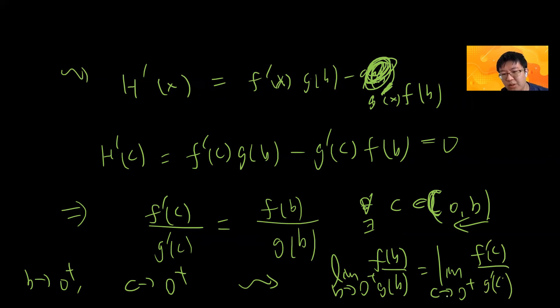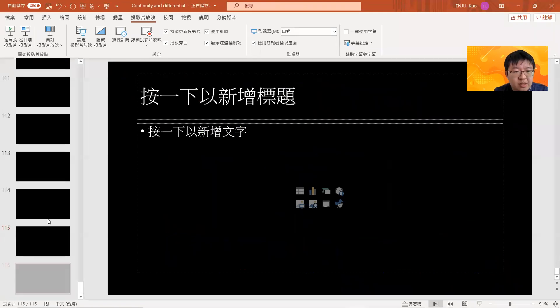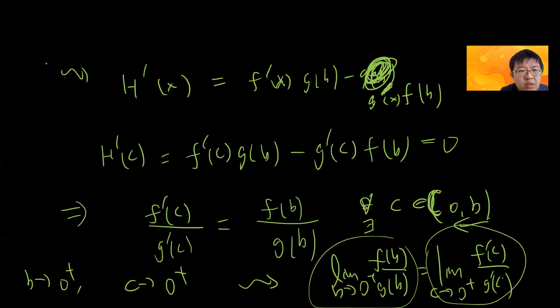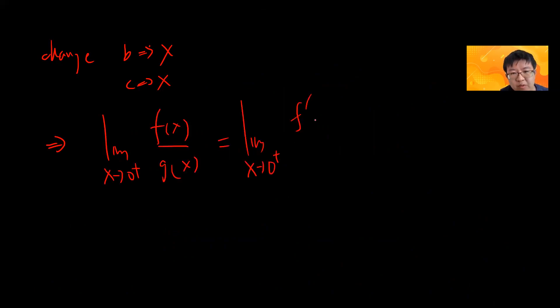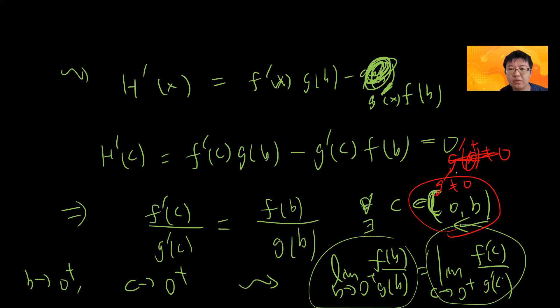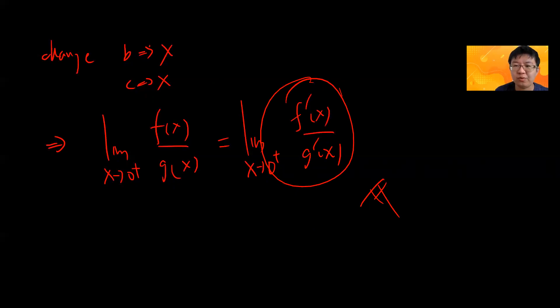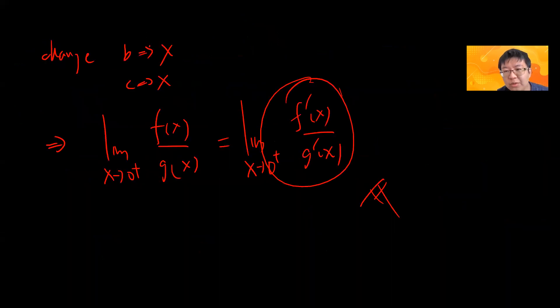Now let b → 0⁺. Since c ∈ (0, b), as b → 0⁺ the point c must also shrink to zero. So we have proved that limit as b → 0⁺ of f(b)/g(b) equals limit as c → 0⁺ of f'(c)/g'(c). Since b and c are dummy variables, renaming both to x gives: limit as x → 0⁺ of f(x)/g(x) = limit as x → 0⁺ of f'(x)/g'(x), provided this limit exists and g'(x) ≠ 0 near zero. This completes the rigorous proof of L'Hôpital's Rule.